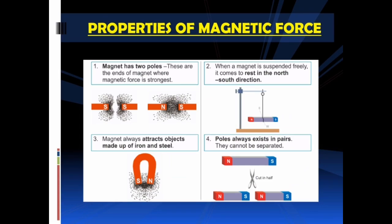Properties of magnetic force: first, a magnet has two poles — these are the ends of the magnet where the magnetic force is strongest. Second, when a magnet is suspended freely, it comes to rest in the north-south direction. Third, a magnet always attracts objects made up of iron and steel. Fourth, poles always exist in pairs and cannot be separated.